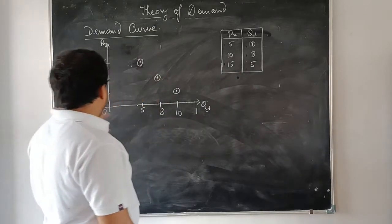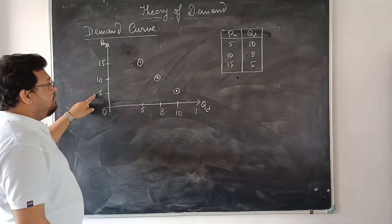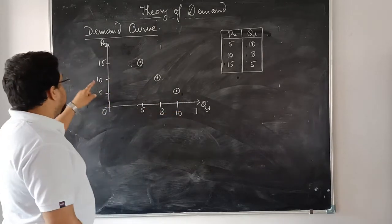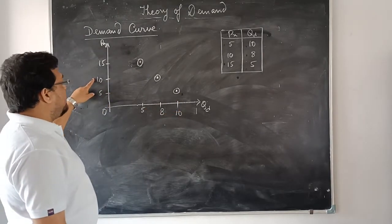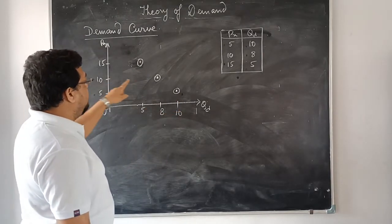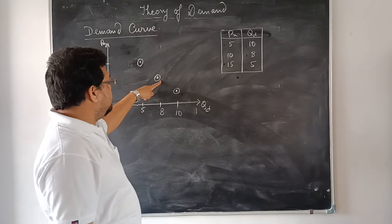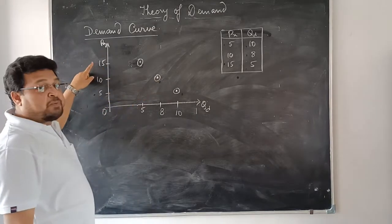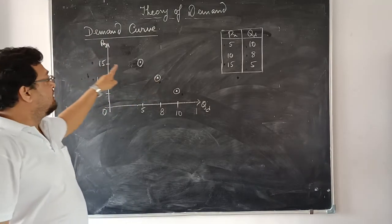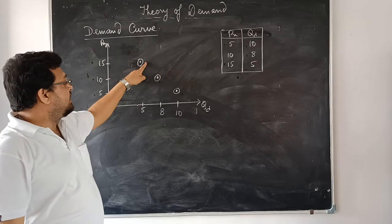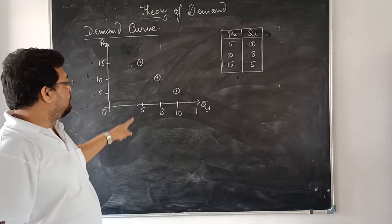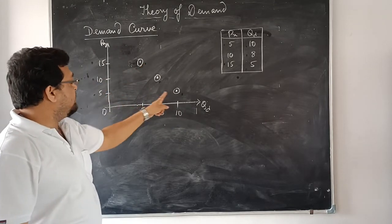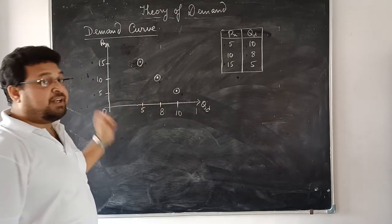At price 5, quantity demanded is 10 units. As price increases to 10, the quantity demanded decreases to 8 units. And as price increases to 15, the quantity demanded decreases to 5. So as price increases, the quantity demanded gradually decreases.